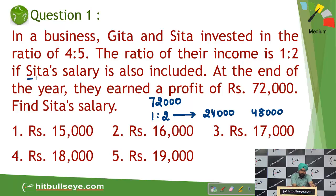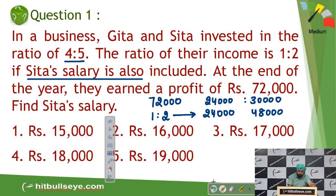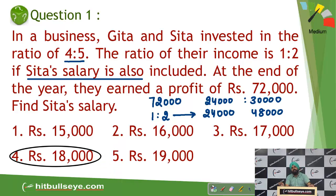Since Sita's salary has been included, Gita's share remains constant. Initially without the salary, they were supposed to divide the share in the ratio of four is to five, giving 24,000 and 30,000. Since Gita gets 24,000 from the profit and Sita's total share is 48,000, the difference of 18,000 is what she is getting as salary.